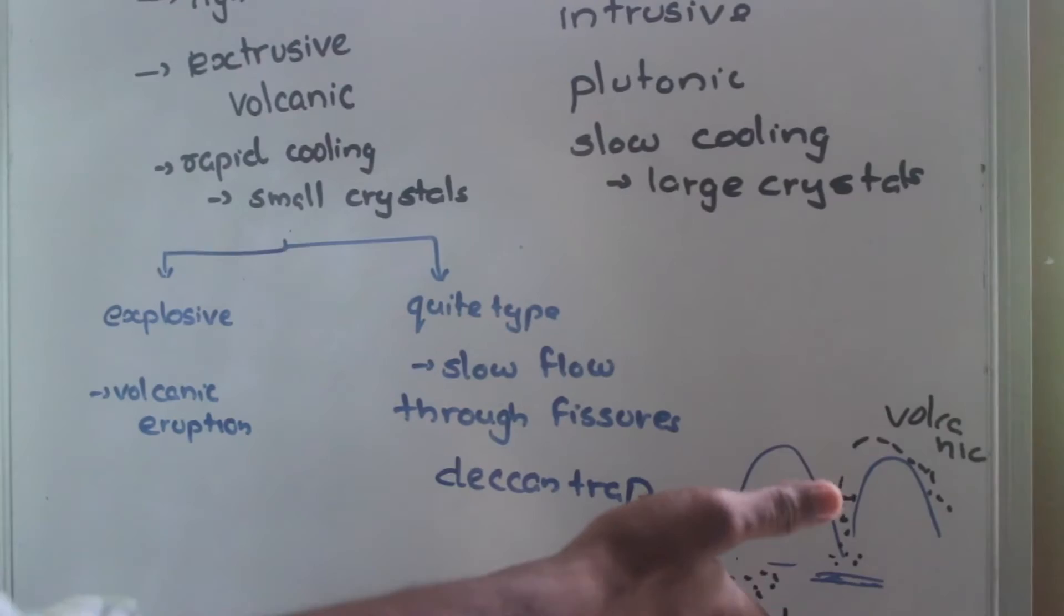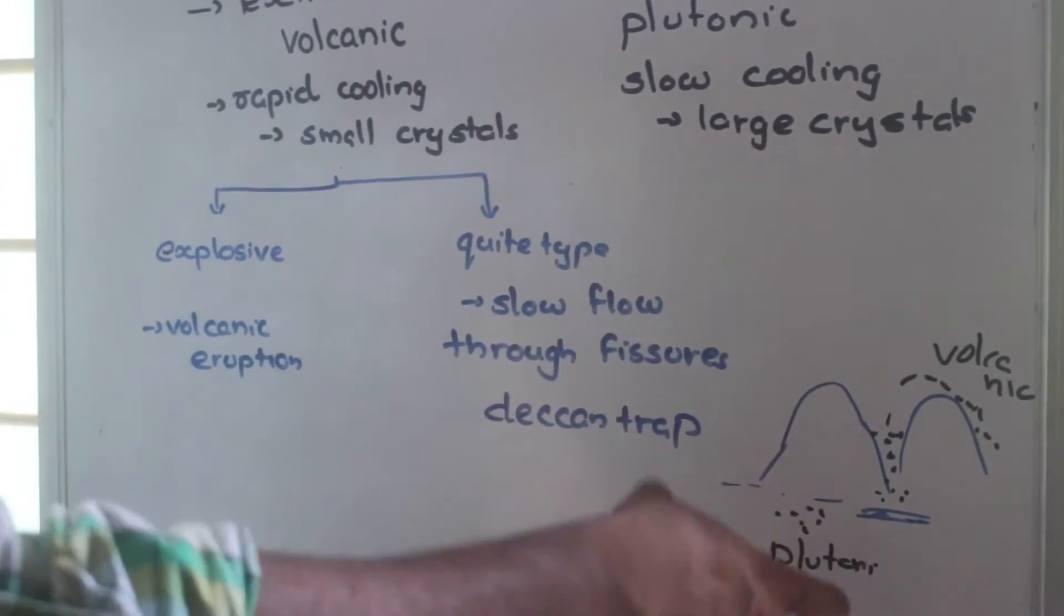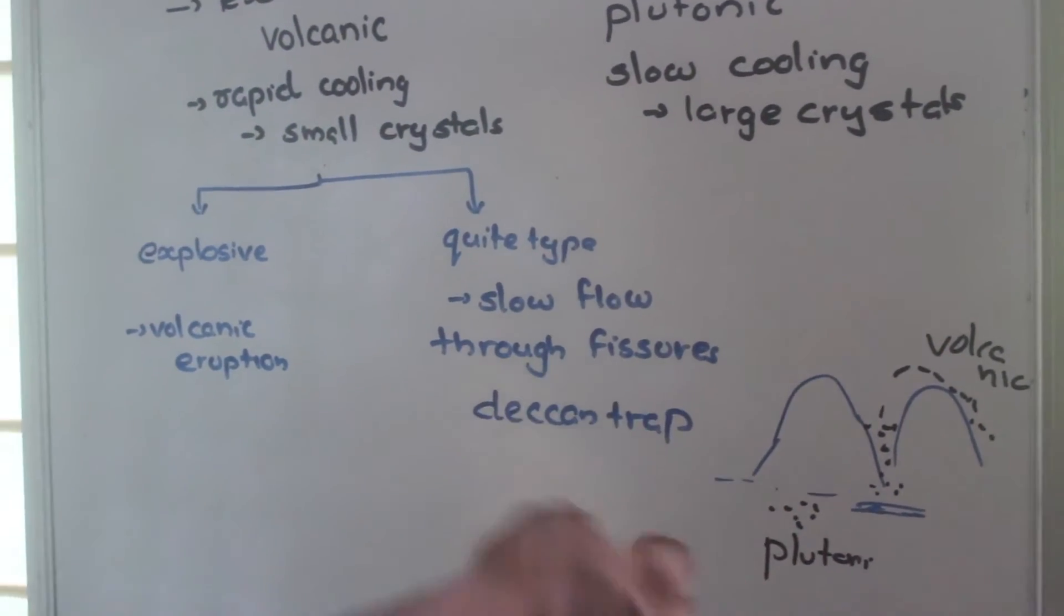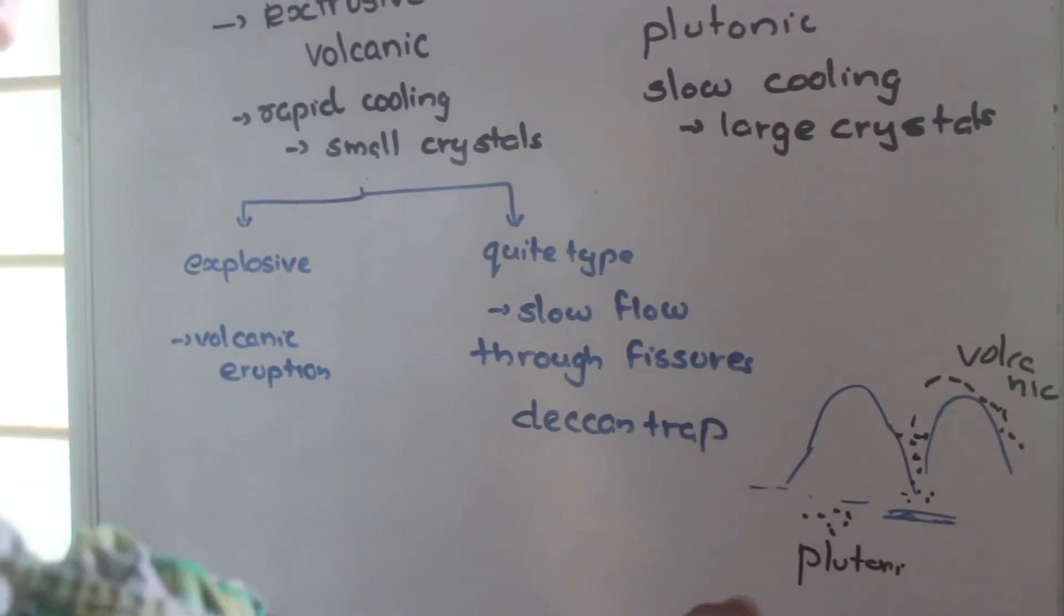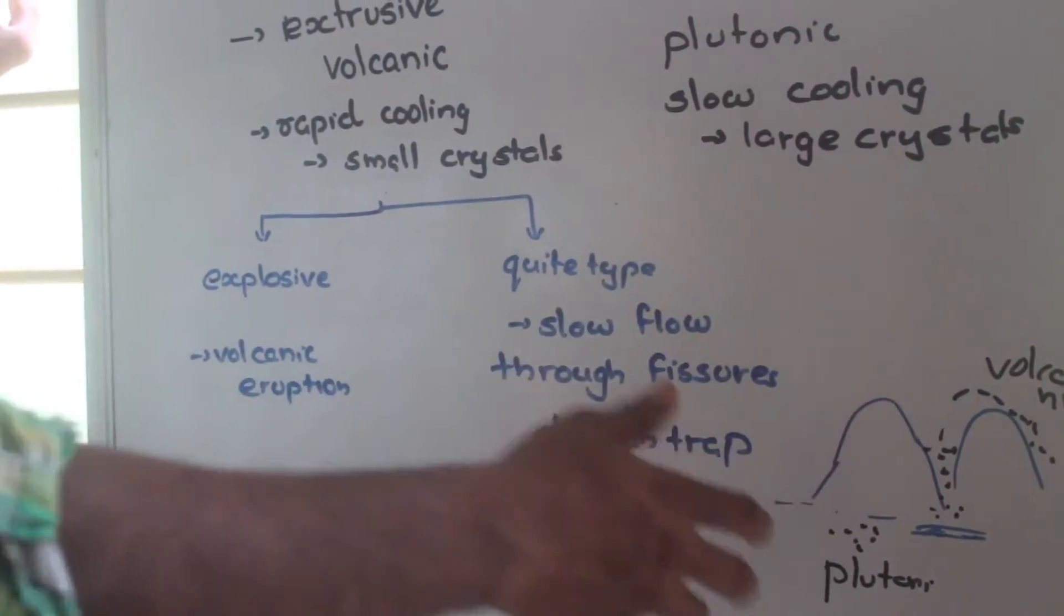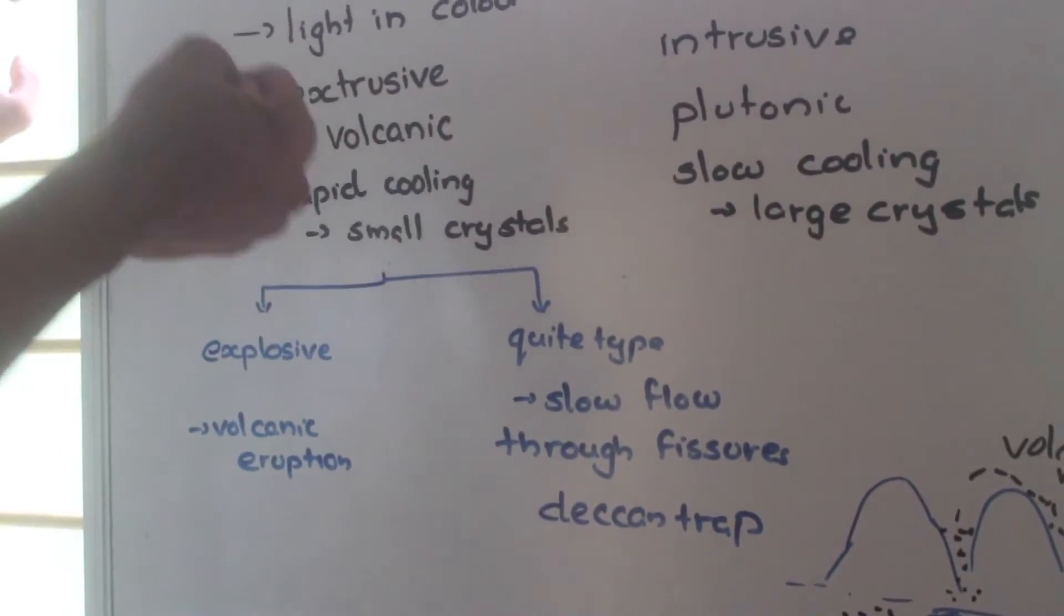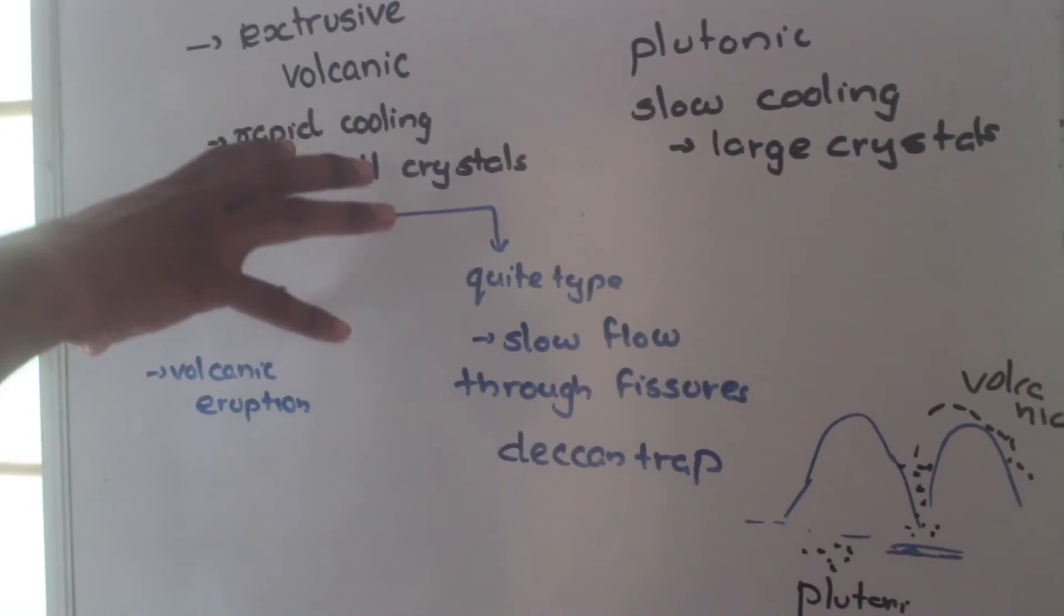As it is in the interior of the earth, the temperature is high and the cooling will be slow, so that the crystals formed there will be larger crystals. Whereas in the extrusive rock, we will have small crystals because of rapid cooling.